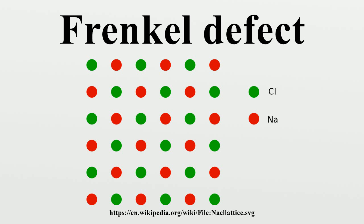One form of a Frenkel defect reaction in MgO, with the oxygen ion leaving the lattice and going into the interstitial site, is written in Kroger-Vink notation. This can be illustrated with the example of the sodium chloride crystal structure. The diagrams below are schematic two-dimensional representations.